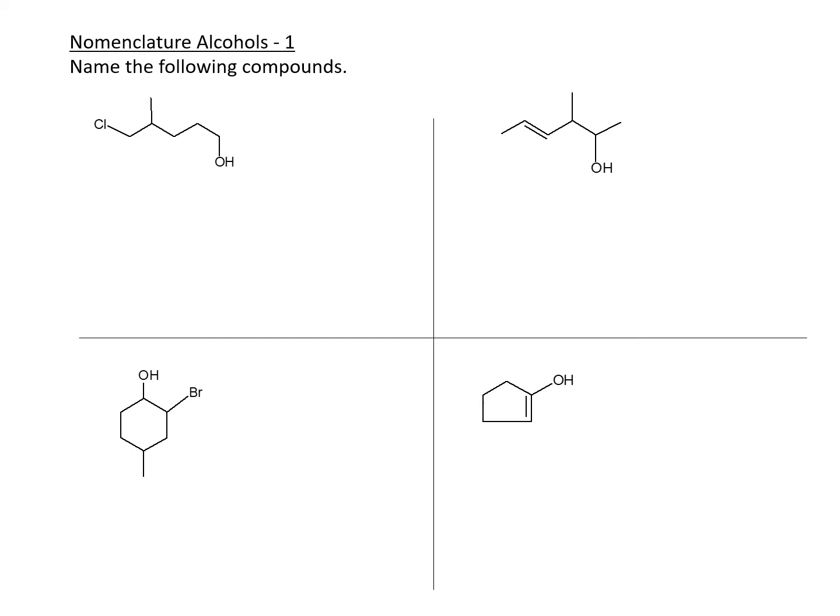Nomenclature of alcohol. First thing we have to remember: at the place where we are, alcohols take priority over everything that we know of. Later on, things will change, but right now, alcohols take priority, which means we have to number closer to the alcohol.